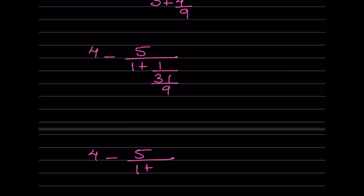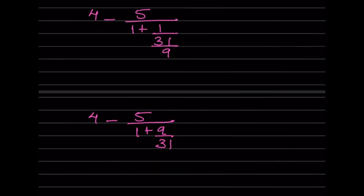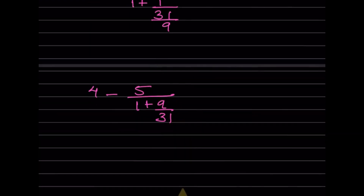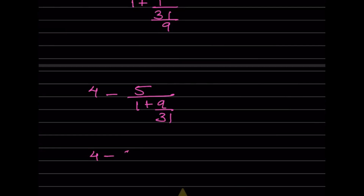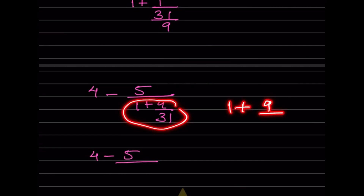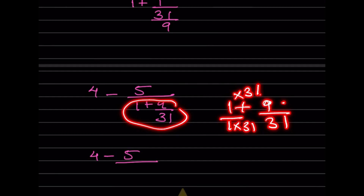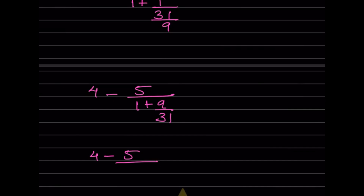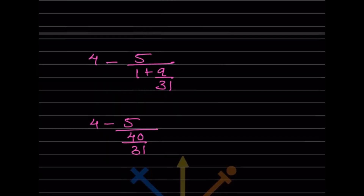We now concentrate on the whole part — the other things remain the same. We write 4 minus 5, and separately we compute 1 plus 9/31. The LCM is 31, so 31 plus 9 = 40, giving us 40/31. We write 40/31.